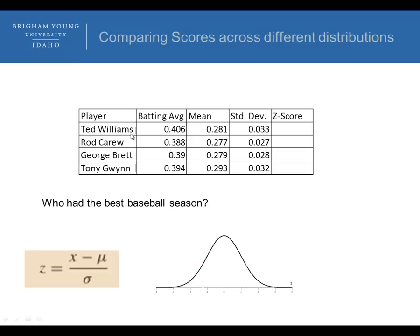Let's look at the z-scores. The z-score for Ted Williams was 3.788. Rod Carew is 4.111, George Brett's is 3.964, and Tony Gwynn's is 3.156.